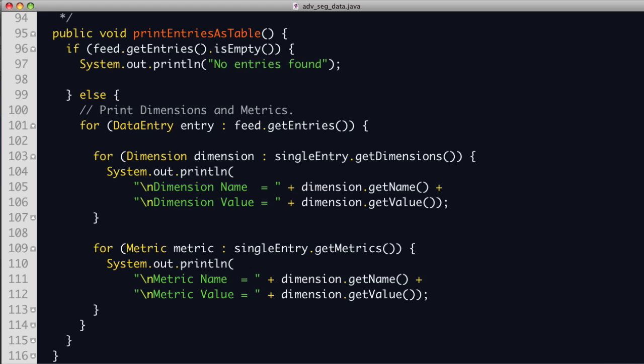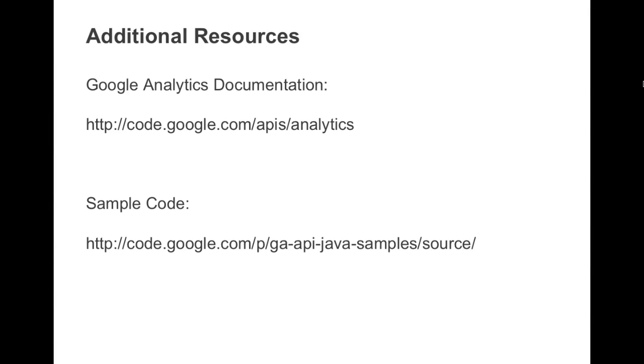The printEntriesAsTable method first makes sure there are entries to print. It then iterates through each entry in the feed, and for each entry goes to the list of dimensions and prints the dimension name and value. It then goes to the list of metrics and prints the metrics name and value too. This simple example will print for the month of October the sources of traffic and the number of visits, transactions, and revenue for only visits that generated greater than zero dollars in revenue. Hopefully, you now understand how Advanced Segmentation works through the Google Analytics API. For more information, check out our online documentation at code.google.com/apis/analytics. The complete Java example is also available for your reference on Google Project Hosting. Thanks!